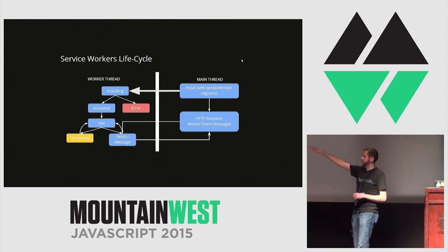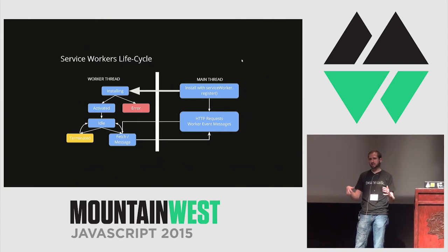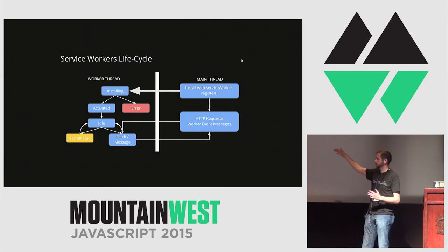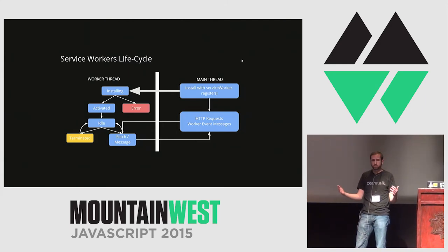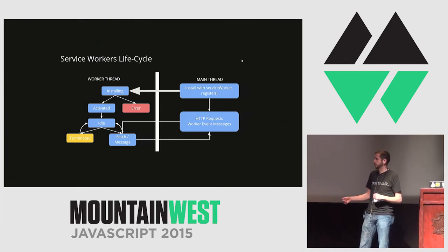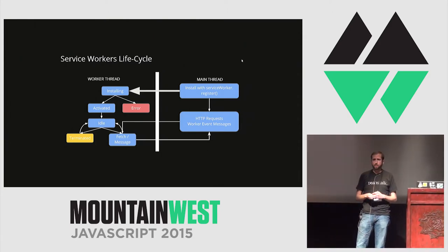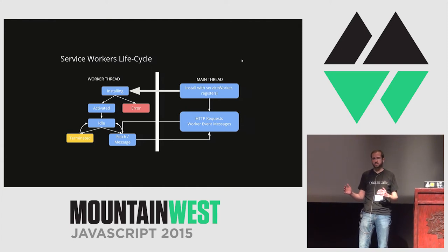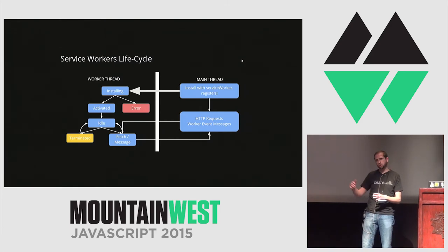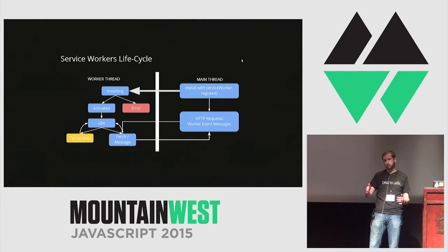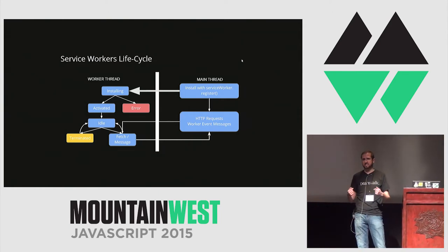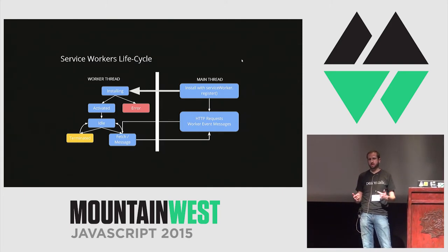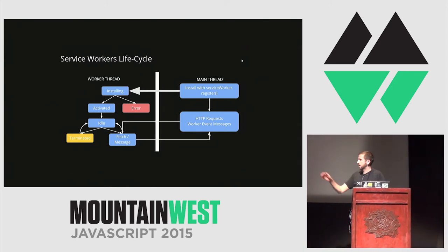Then we proceed to the idle state where it can listen for events from the main thread or actual HTTP requests. There's also the terminated state — the browser will automatically shut down and restart this thread at will. For example, if you switch to a new tab, it may shut down the thread after five seconds, then restart it when you switch back. Any state inside that service worker needs to be persisted, because it may shut down or boot up without you controlling when or how.